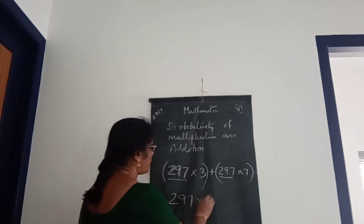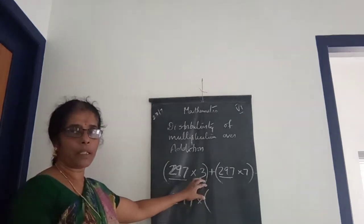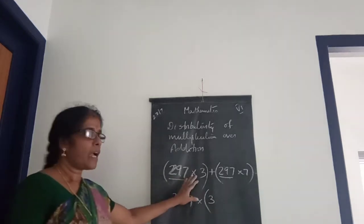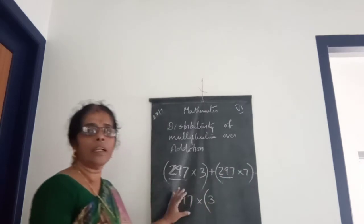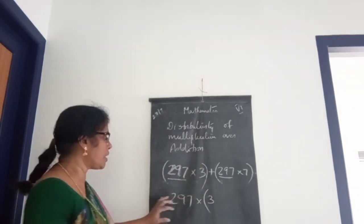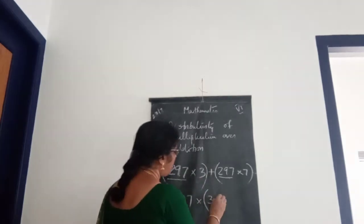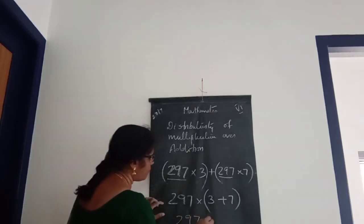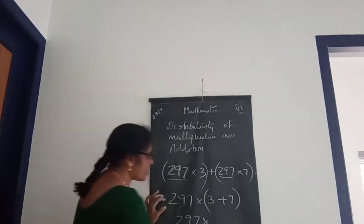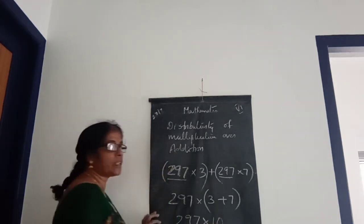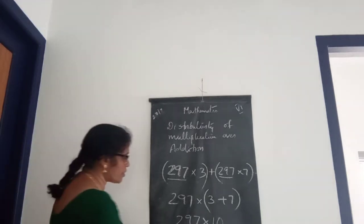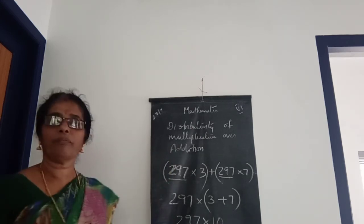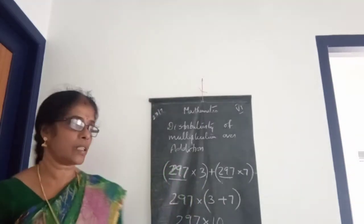Then next, put a bracket. What is here? Multiply by 3 and multiply by 7. The same number is multiplied by 3 and also by 7, so we can take out the common number: 297 into (3 plus 7). What is 3 plus 7? That is 10. So 297 into 10 — you just put a zero — giving 2970.